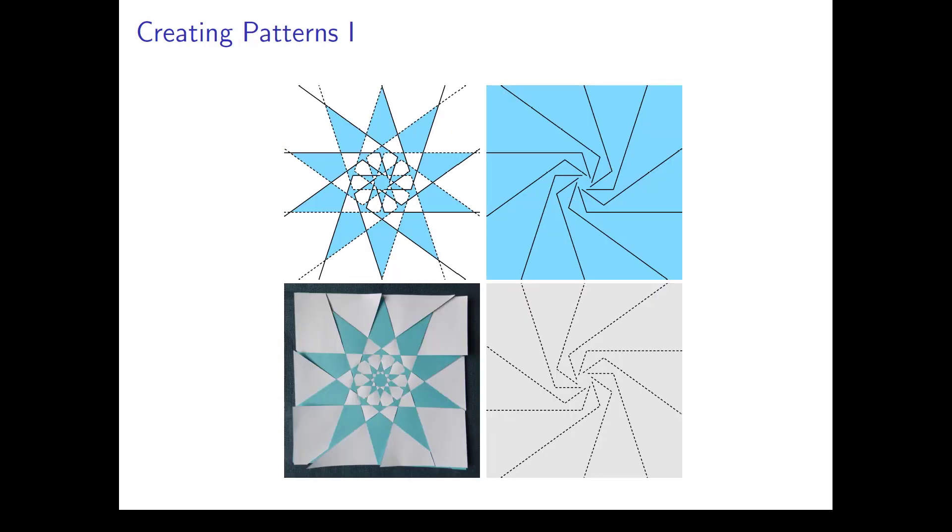Here we see a simple example for a ten-pointed star, as it appears in some Geary tilings. In the top-left image, we see the lines partitioned into solid and dashed lines. The right two are the cutting patterns for the two sheets of paper, and the bottom-left image shows a woven paper star.